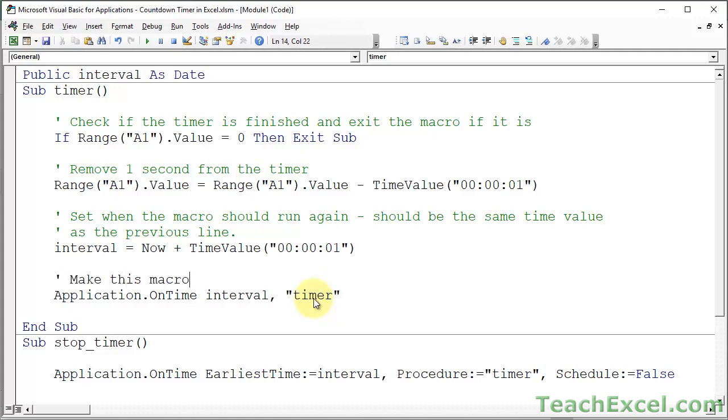Make this macro run again in one second. So you can see it's actually a rather simple concept. And the application dot on time is what allows us to avoid a lot of the complications, a lot of the complex stuff that you have to use in other timer related macros. So we've got application dot on time interval timer. And it will just go and run this macro again.